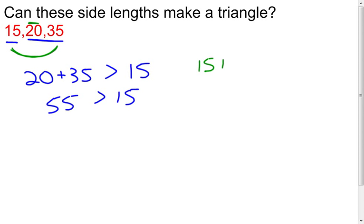So now I'm going to take my two side lengths of 15 and 35. Triangle Inequality Theorem tells me it has to be greater than the length of the third side, which is 20. This comes out to be 50. Yep, 50 is greater than 20.